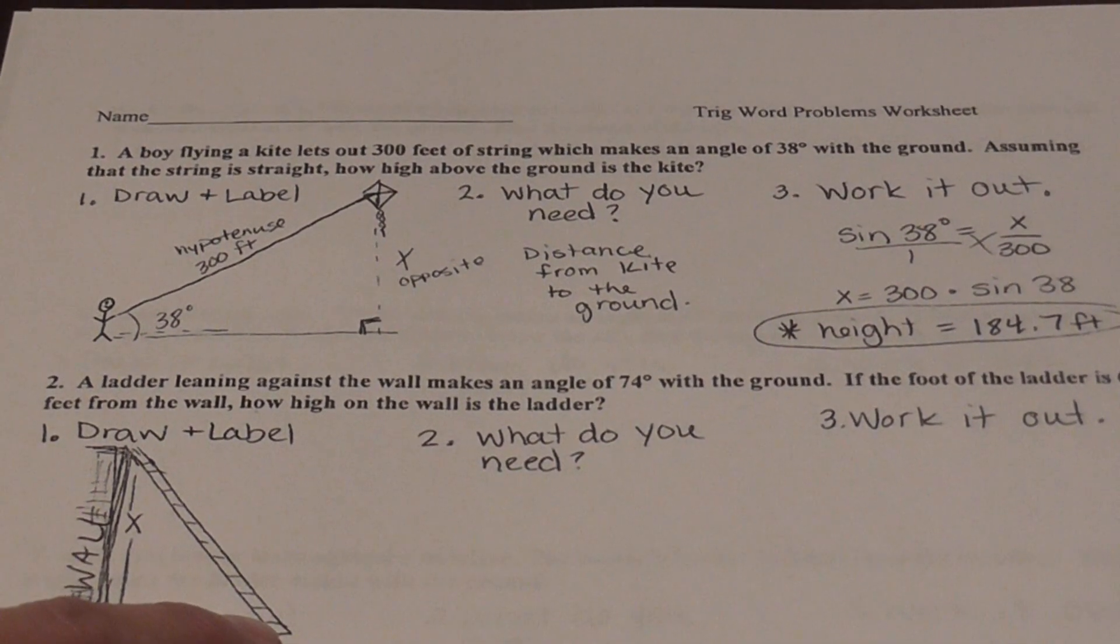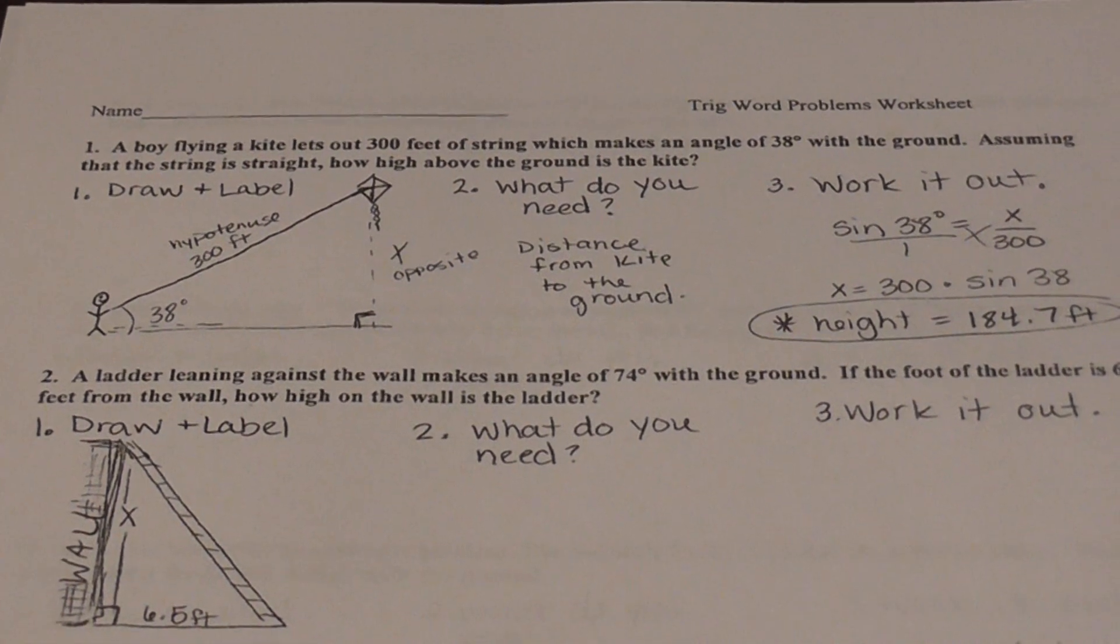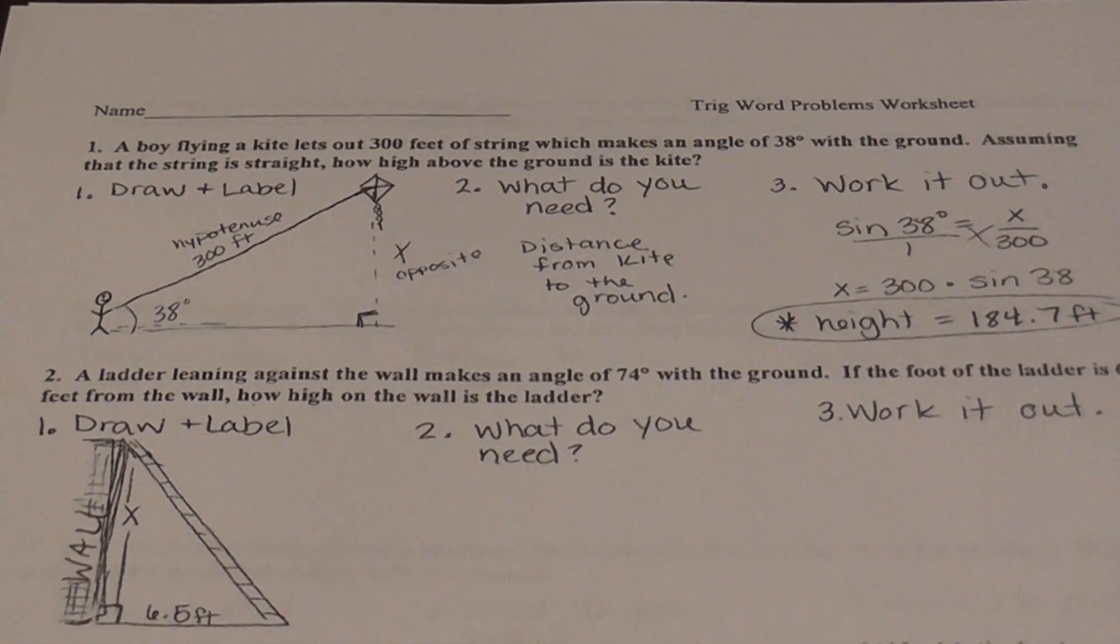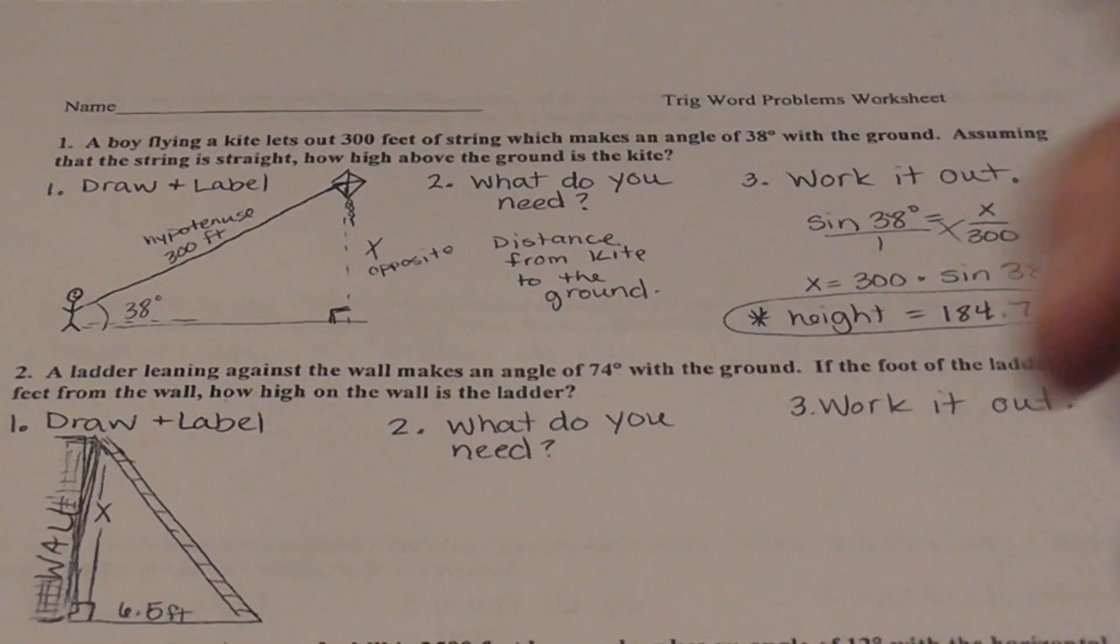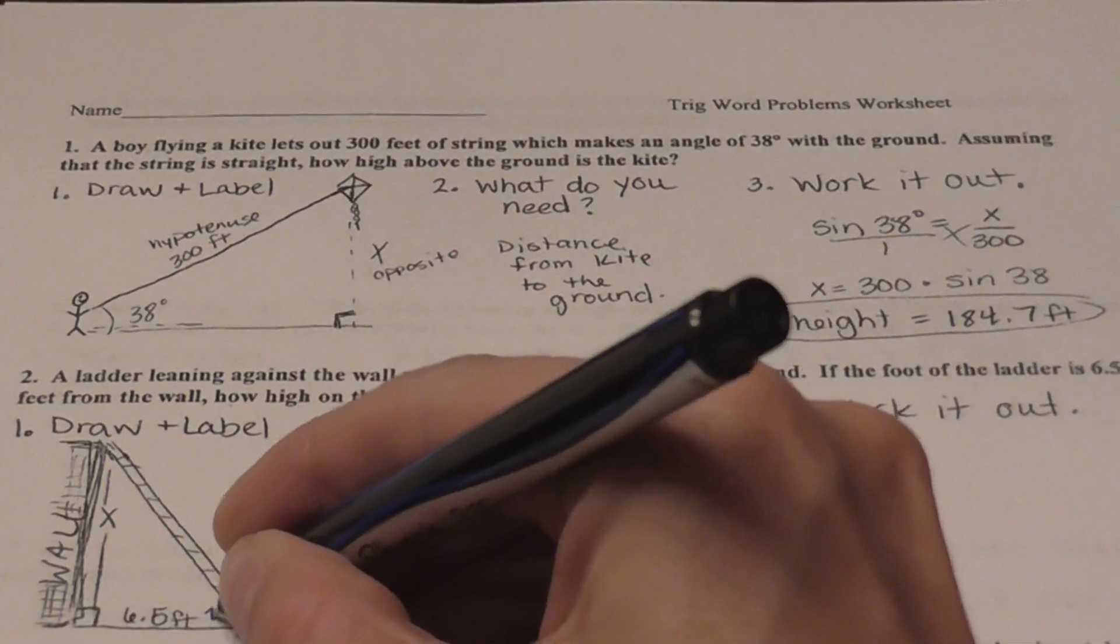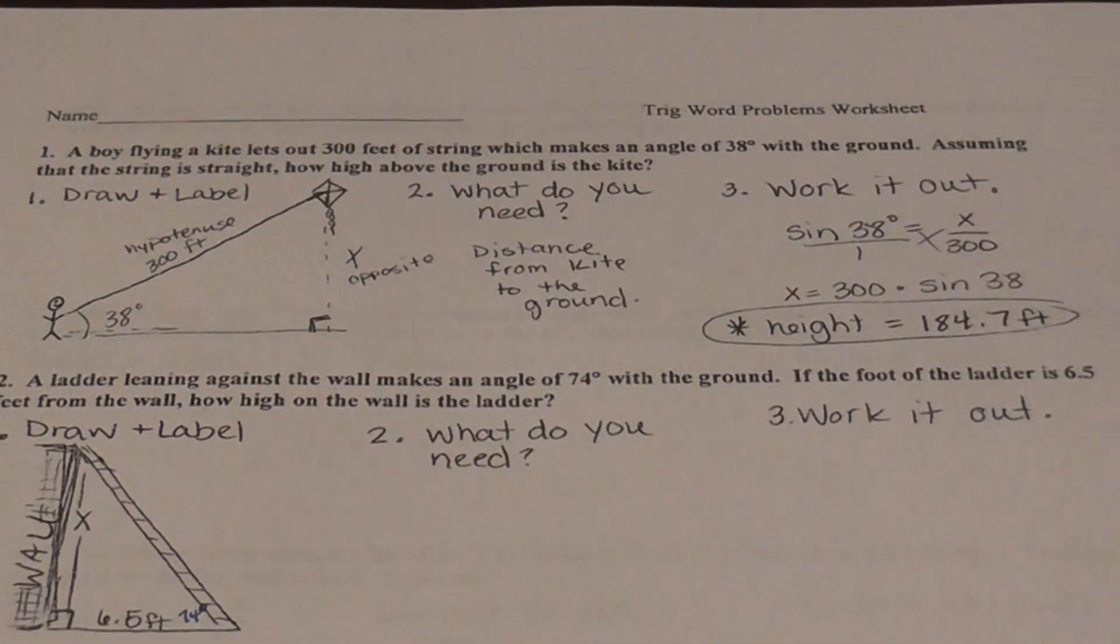All right. We do know that it's making a 74 degree angle with the ground. So we can go ahead and fill that part in. So we can fill in the 74 degrees right here. Because that's what's going to go there.